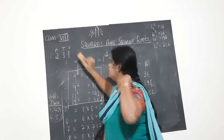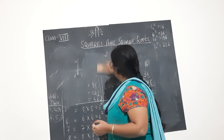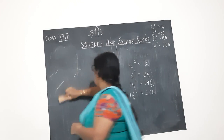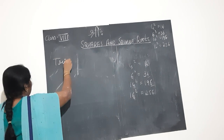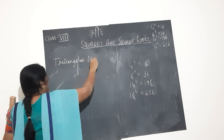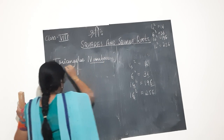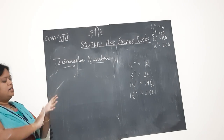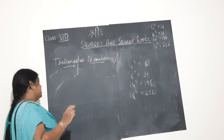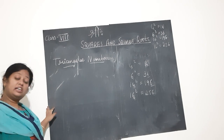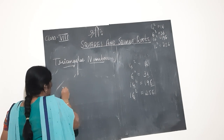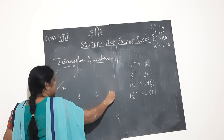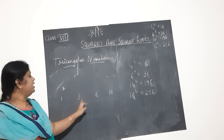Next, we have the concept of triangular numbers. What are triangular numbers? Any number which, when explained in the form of a figure, can be represented in the form of a triangle — those are called triangular numbers. I will represent them with the help of stars: 1, 3, 6, 10 — like that it goes. These are called the triangular numbers.